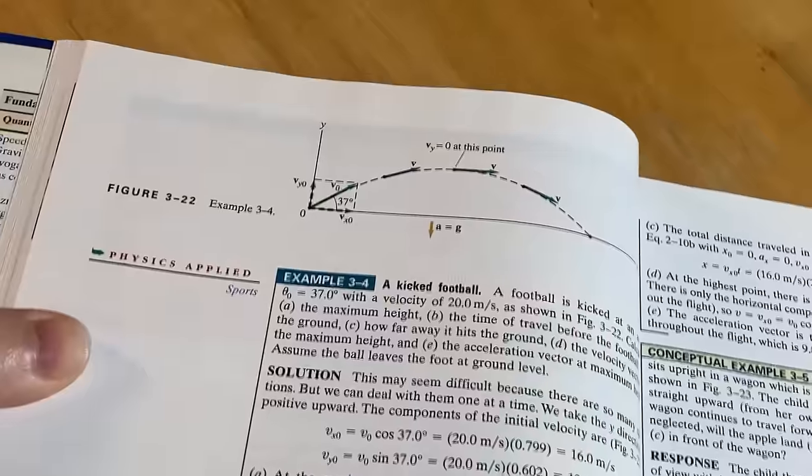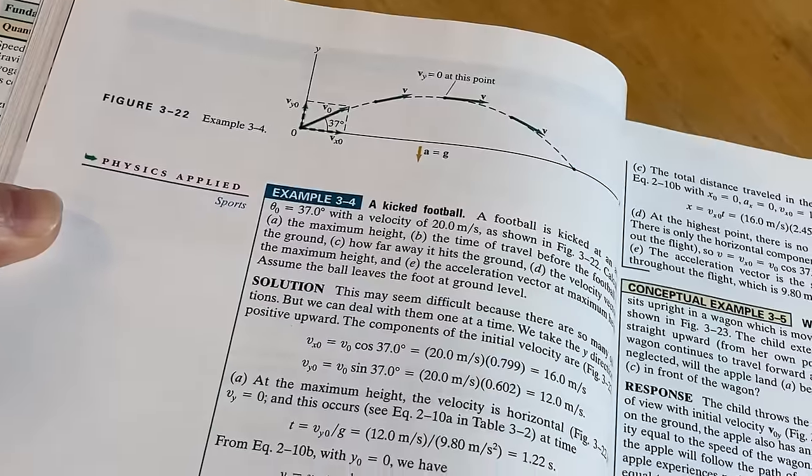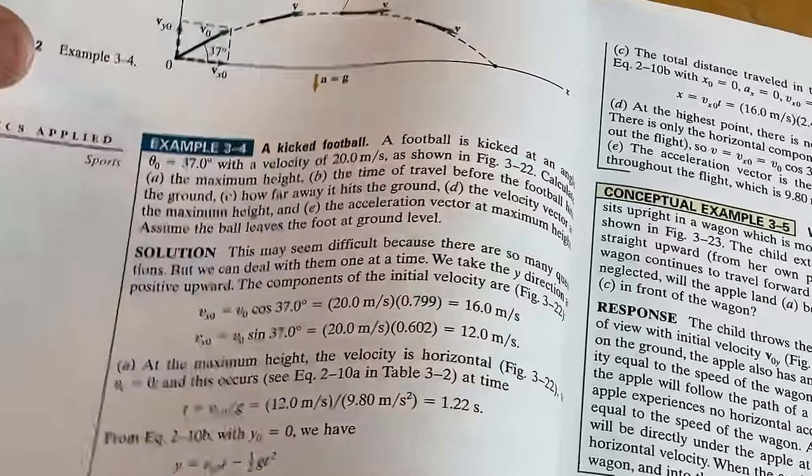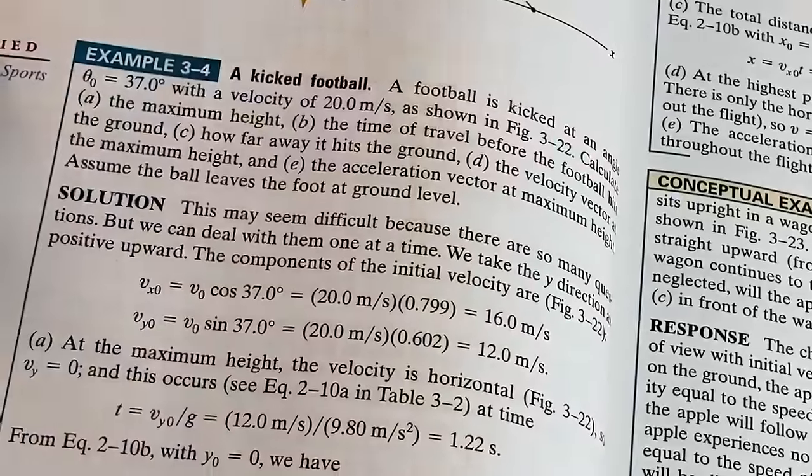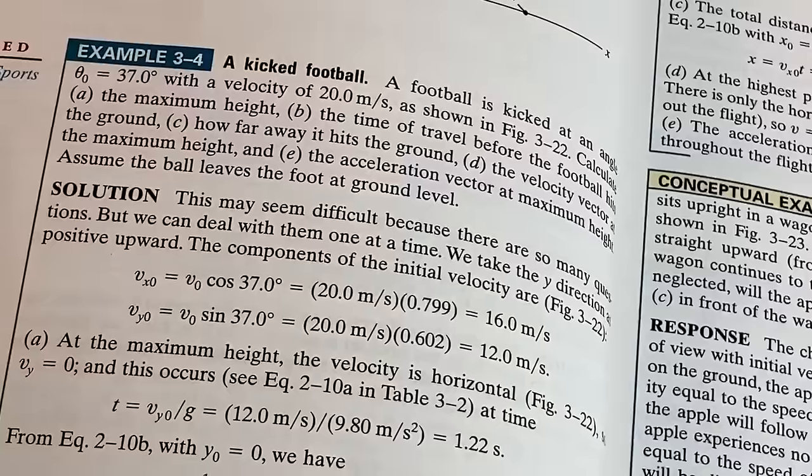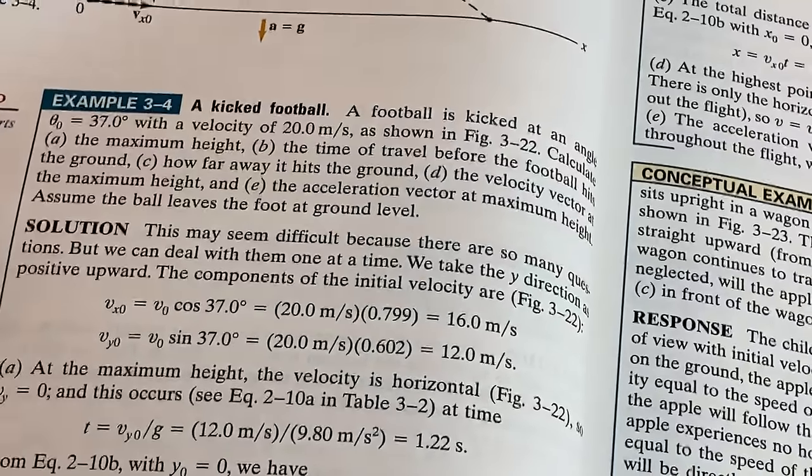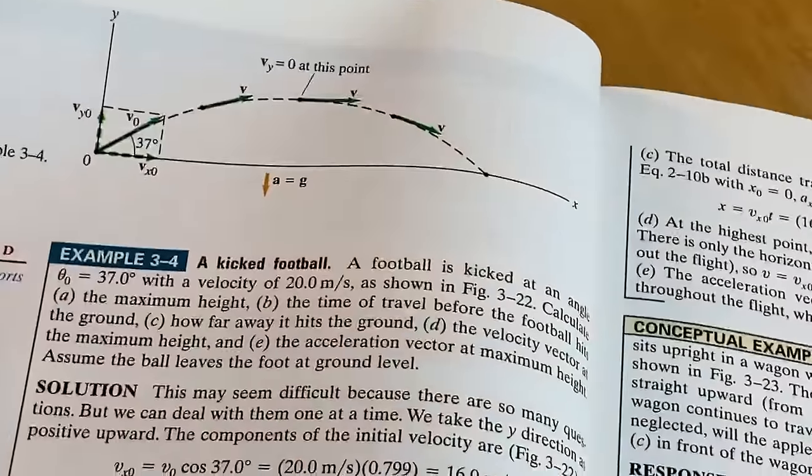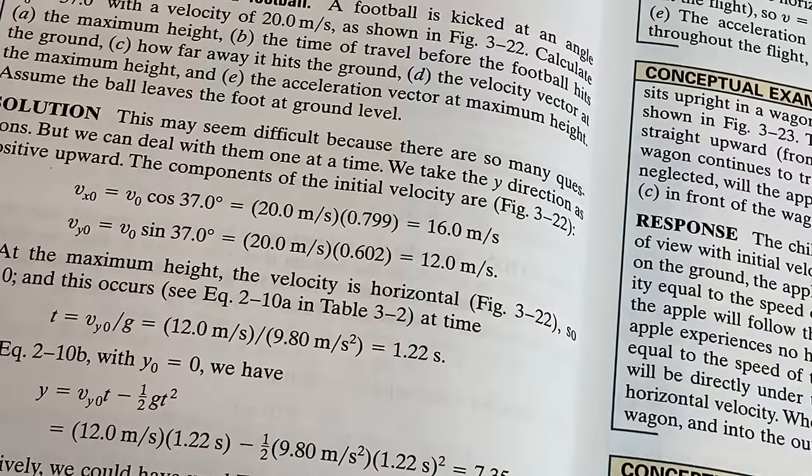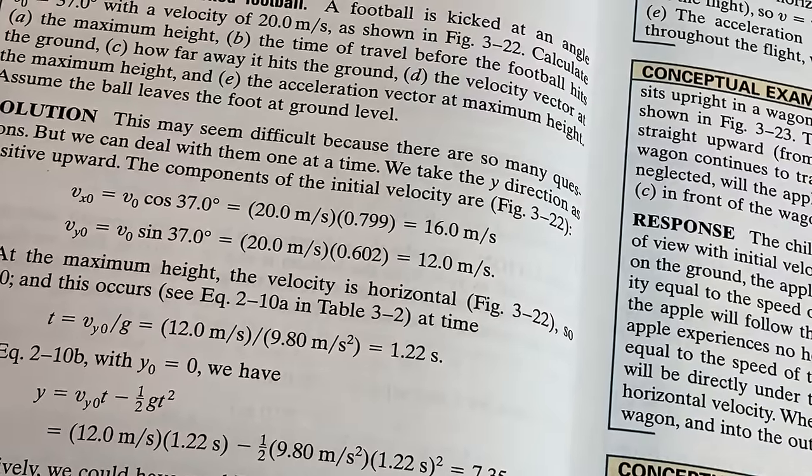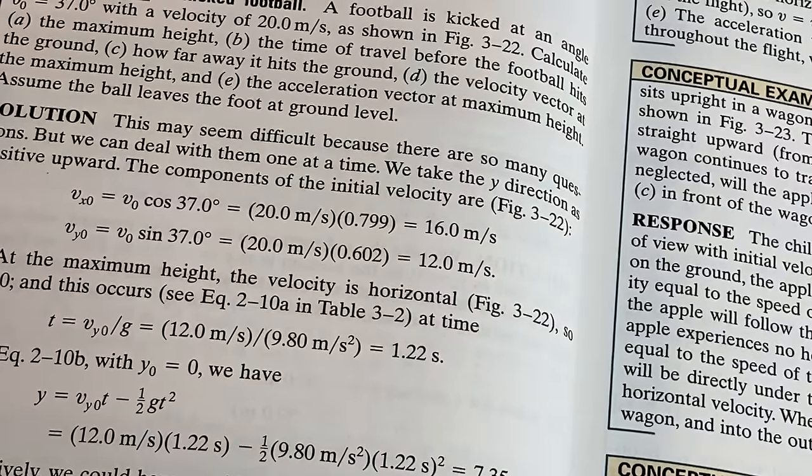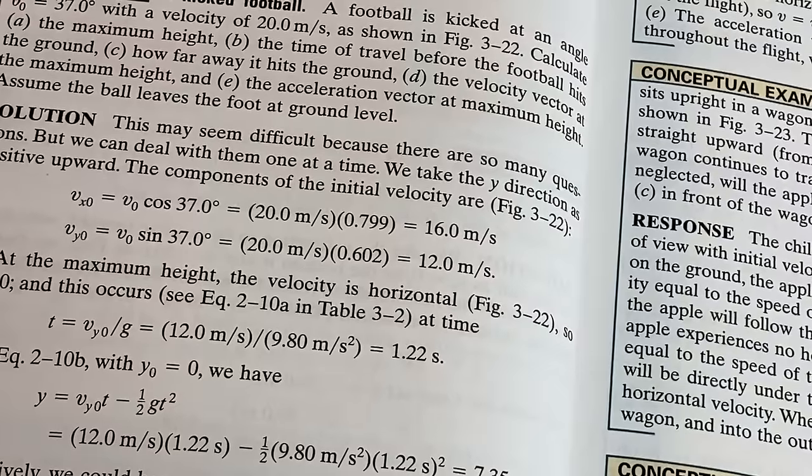Here's an example so you can see some of the examples in this book. 'A football is kicked' - so there's an image there. It says a football is kicked at an angle of theta naught. I remember the first time learning that that's pronounced theta naught was in a physics class. They said naught and I'm like 'oh, the zero is naught, it's pronounced naught.' Theta naught equals 37 degrees with a velocity of 20 meters per second, as shown in figure 3-22, which is the figure up here. And it says calculate the maximum height, the time of travel before the football hits the ground, how far away it hits the ground, the velocity vector at the maximum height, and the acceleration vector at the maximum height. Assume the ball leaves the foot at ground level. Pretty cool, right?